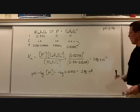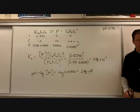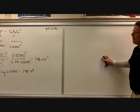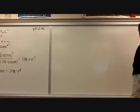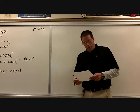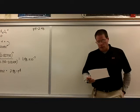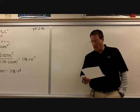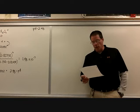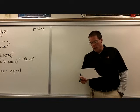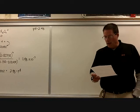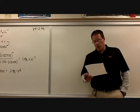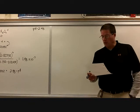Part C says calculate the pH of a solution formed by dissolving 21.7 grams of the solid cesium hexanate — the formula is given there — in 250 milliliters of our 0.75 molar hexanoic acid. Assume that the volume change is negligible.